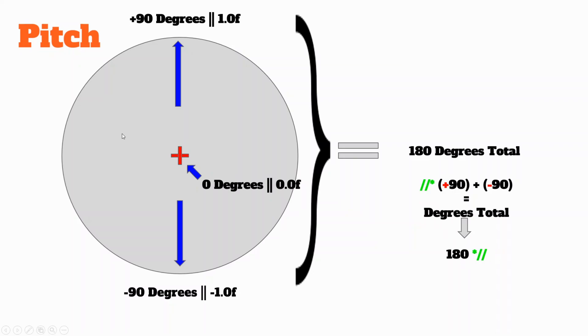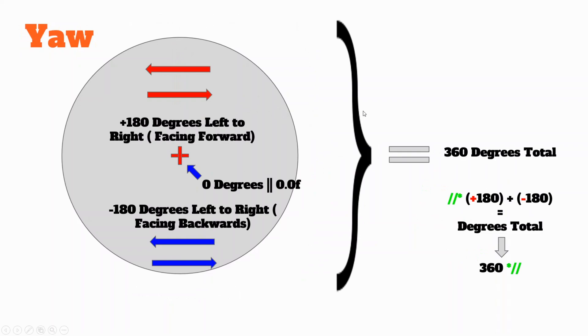What is yaw? Yaw is when you look left to right. When you're facing forward in your game and looking left to right, that degree is 180 from your complete left to your complete right. When you're looking straight ahead, you're at zero degrees, zero float.